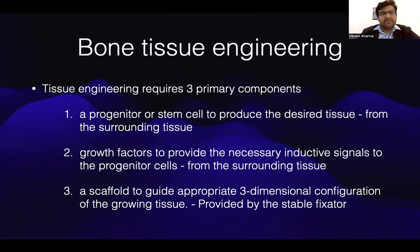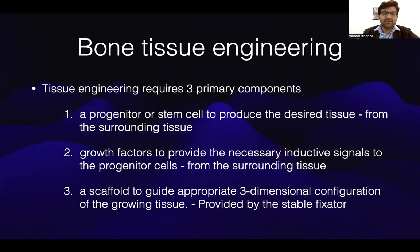Bone tissue engineering requires three primary components: a progenitor or stem cell to produce the desired tissue, which is available in the surrounding tissue; growth factors to provide the necessary inductive signals to the progenitor cells, which are received from the surrounding tissue; and a scaffold to guide the appropriate three-dimensional configuration of the growing tissue, which is provided by a stable fixator distracting the osteotomy site.